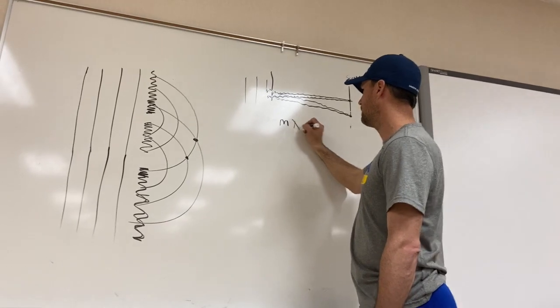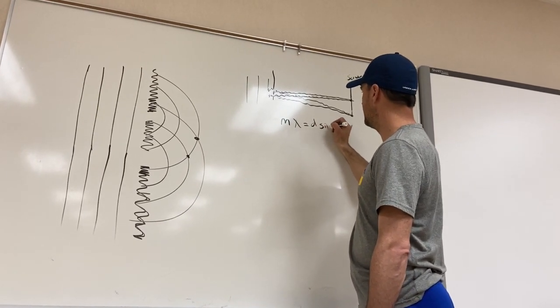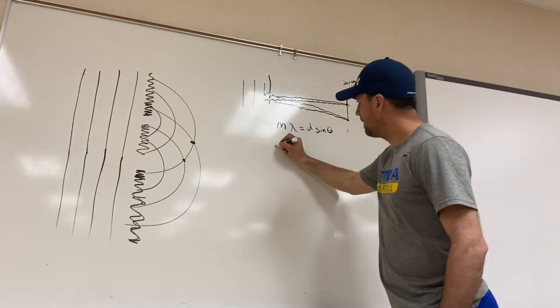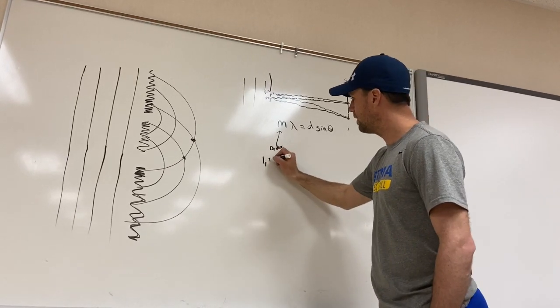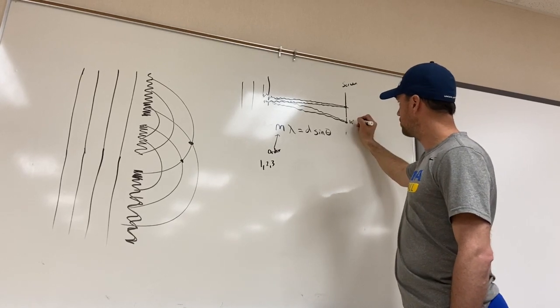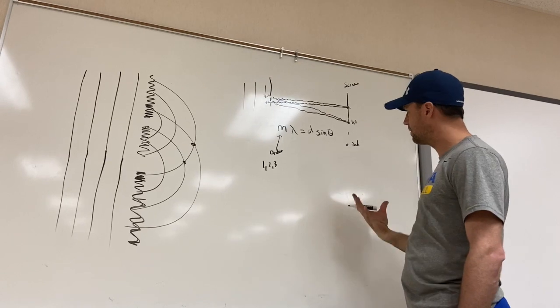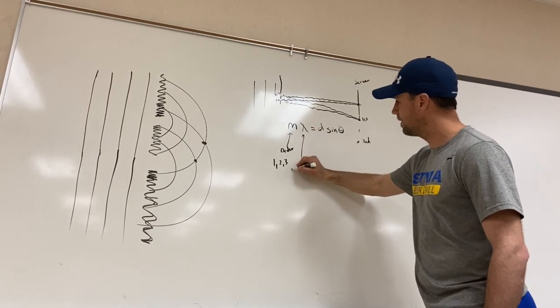...says that we can use this equation. M lambda equals D sine theta. M is the order of the bright spot. So that's going to be like one, two, three. Right. So this would be like your first order bright spot. The next one out here would be your second order bright spot. And so on. Okay. Lambda is the wavelength we're looking for.